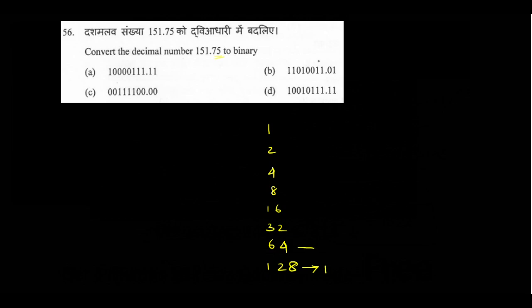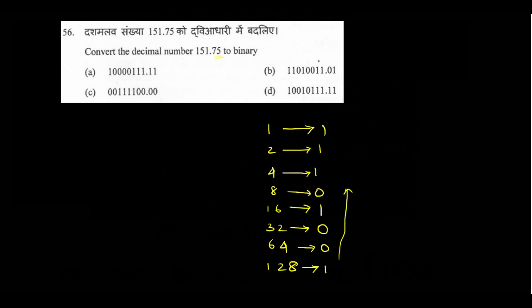Continuing: 128 + 16 = 144; 144 + 4 = 148; 148 + 2 = 150; 150 + 1 = 151. So the binary representation, writing MSB first, is 10010111. Option D is the answer. This is the quick method to solve decimal-to-binary conversion.